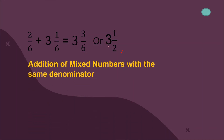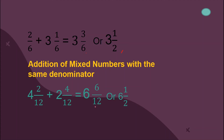How about addition of mixed numbers with the same denominators? Since we have whole numbers, the first thing we do is add the whole numbers: 4 plus 2 is 6. Add our numerators: 2 plus 4 is 6. And copy our denominator, 12. Can we still simplify the fraction part? Is there a number that can divide 6 and 12? Yes, the number 6. So 6 divided by 6 is 1, and 12 divided by 6 is 2. Copy the whole number 6. So our final answer is 6 and 1 half.